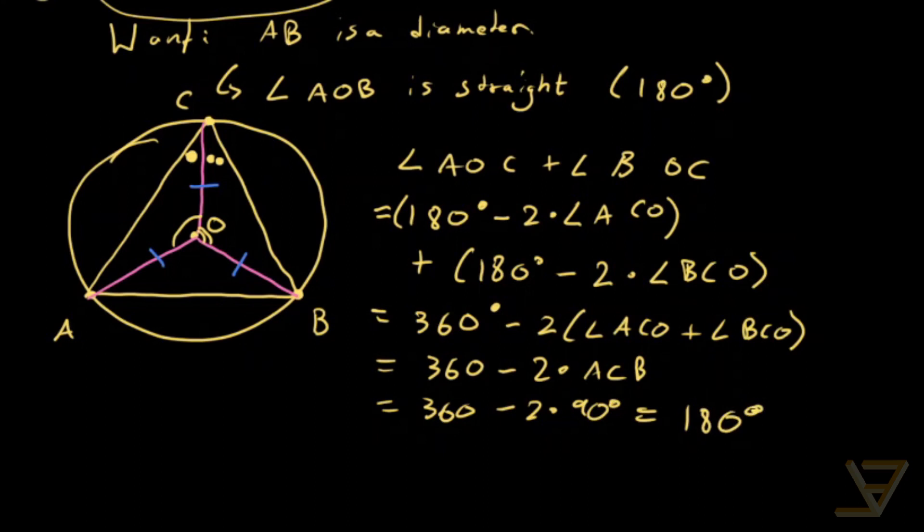So AB does lie on a diameter because angle AOB is a straight angle. So that proves the second direction. Thank you for watching, and I'll see you next time.